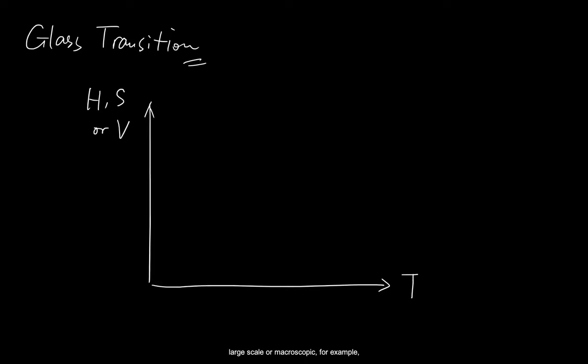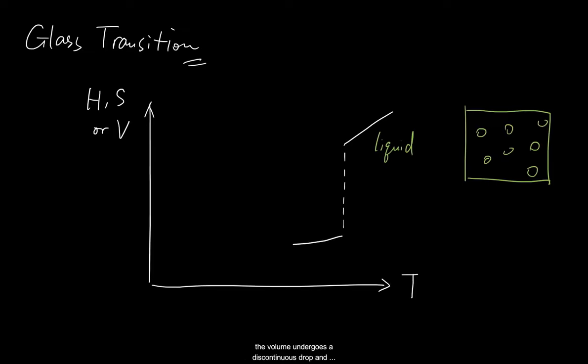Just like how ice is formed by freezing liquid water, when we talk about a glass, we think of it as coming from a liquid form. Let's say we look at how a state function of a substance changes with temperature. It can be enthalpy or entropy, or something more large scale or macroscopic, for example, volume. We start off from a liquid being cooled down. As the liquid hits melting point, the volume undergoes a discontinuous drop and becomes a crystal, where molecules become perfectly aligned in lattices.